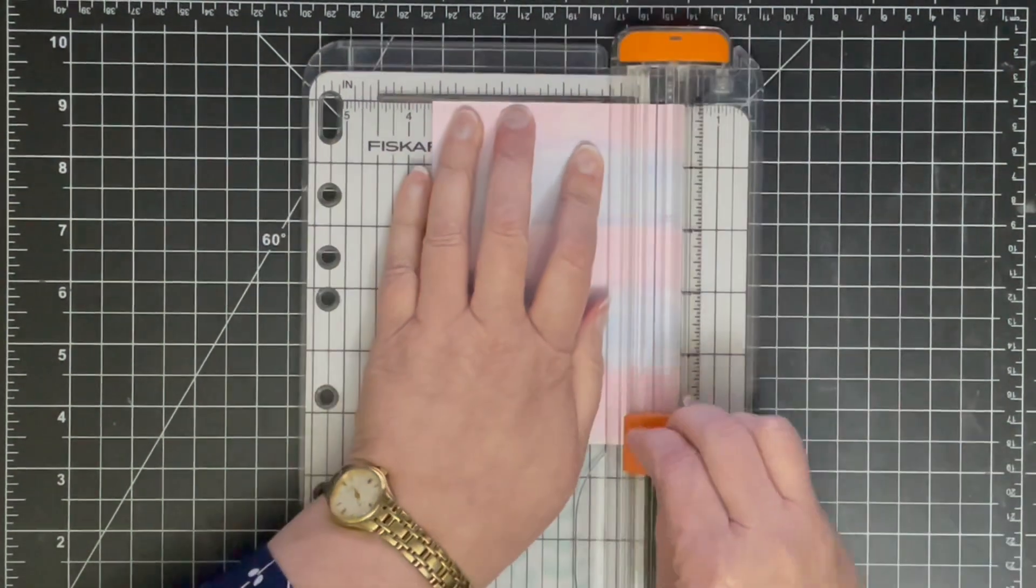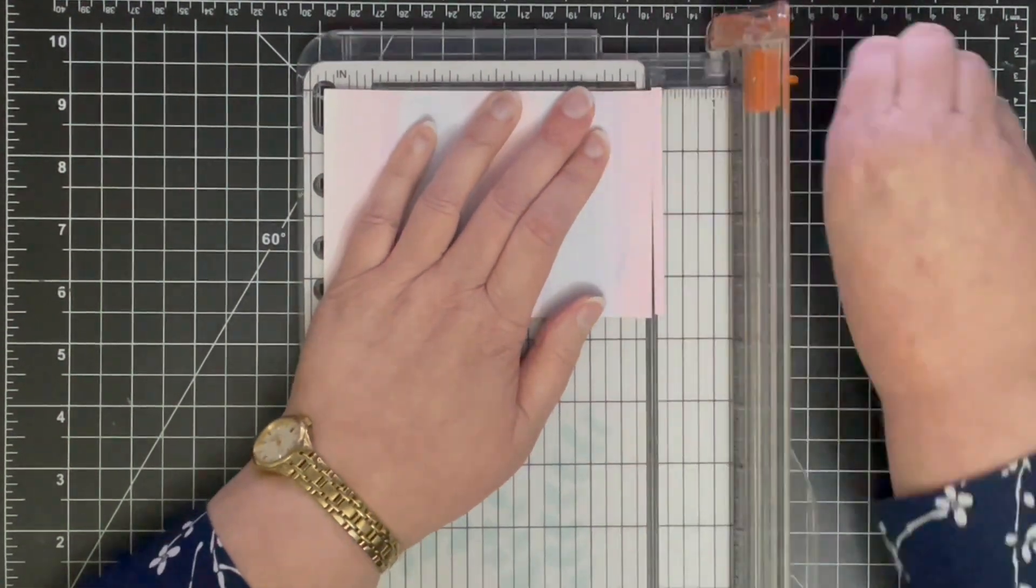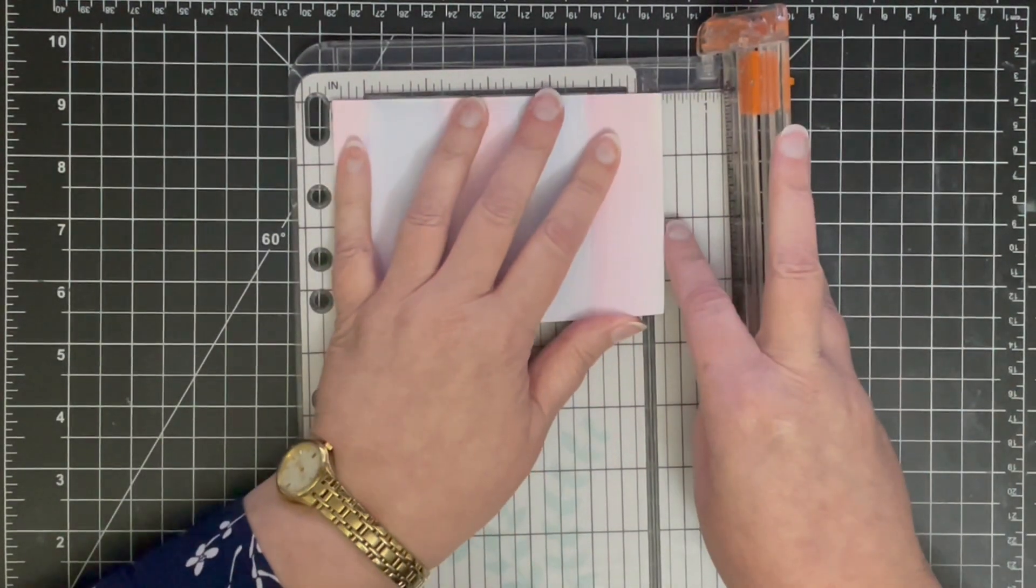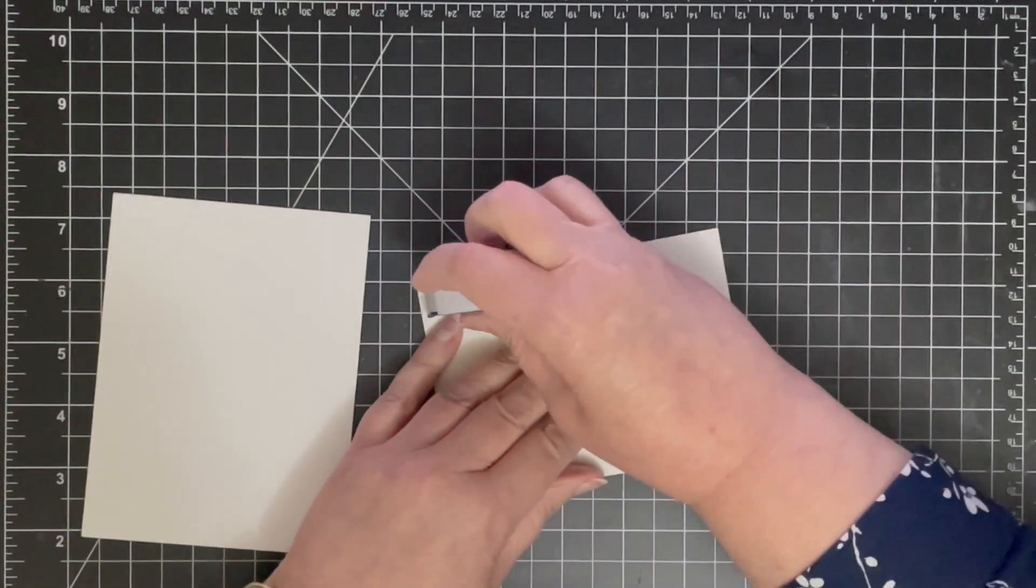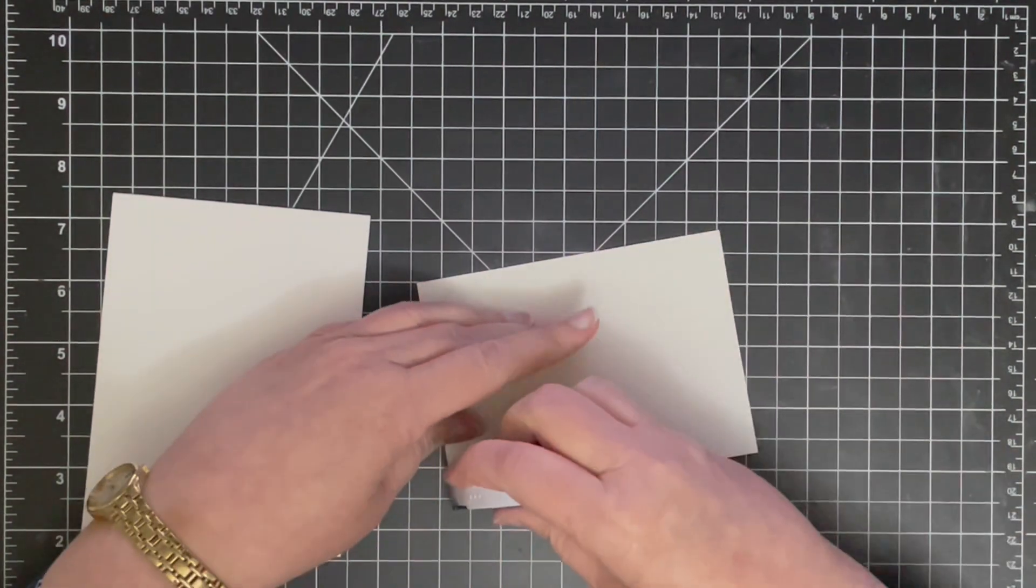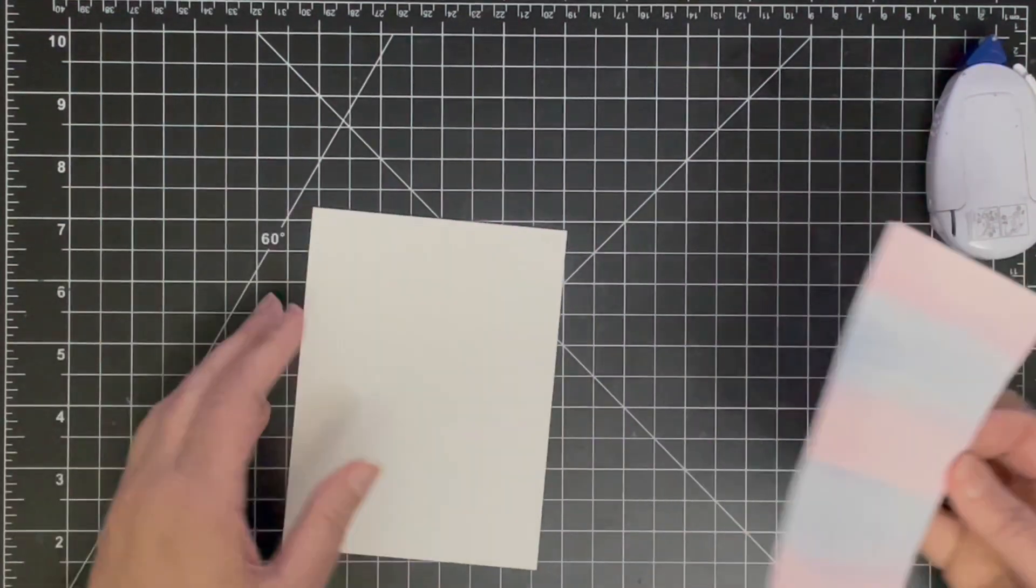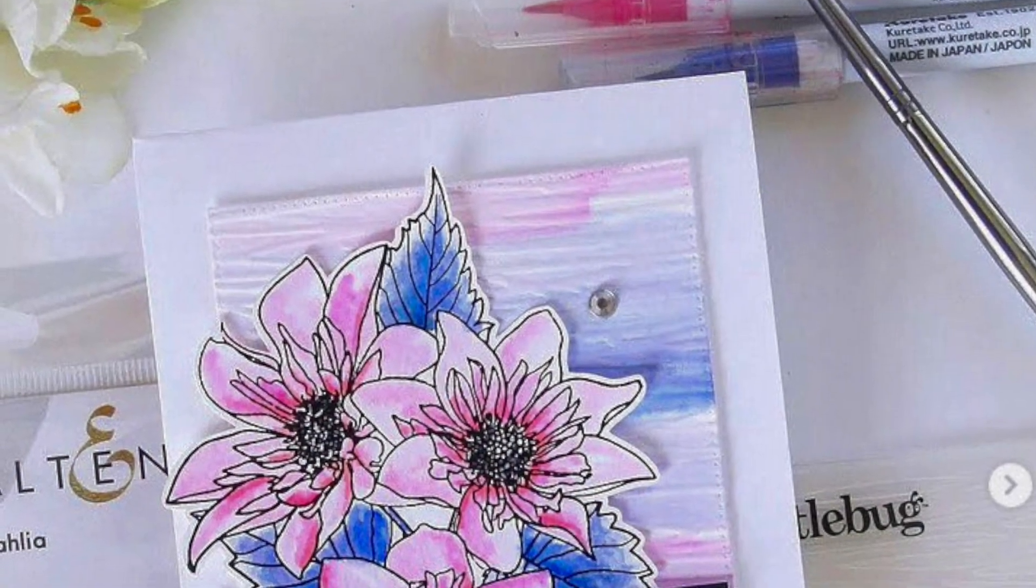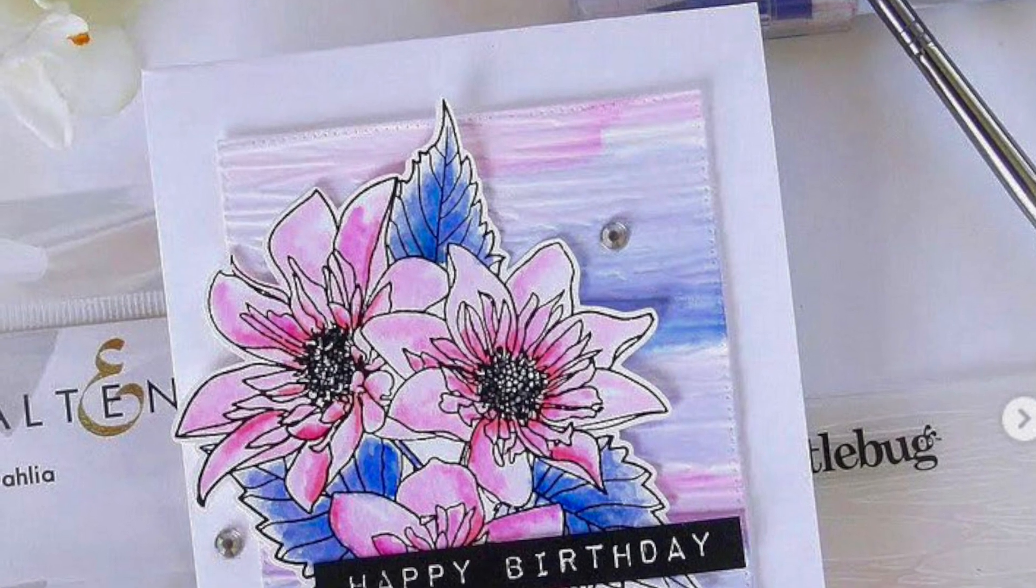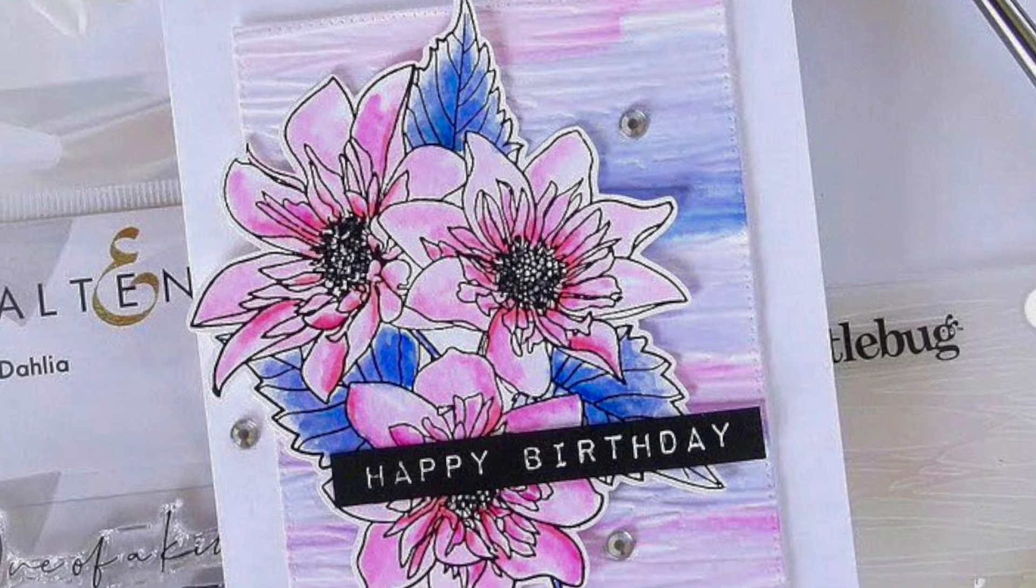Before I cut it down with my paper trimmer, I'm going to adhere this to my card base. I'm making sure that I have about a quarter inch border around each side of this panel because I want that white border all the way around the edge. I quite often do that, I just really like a little bit of white space even if it's only a very small amount. It's satisfying to me but also the card that I'm casing today from Hannah Lee has a white border so I went with it.